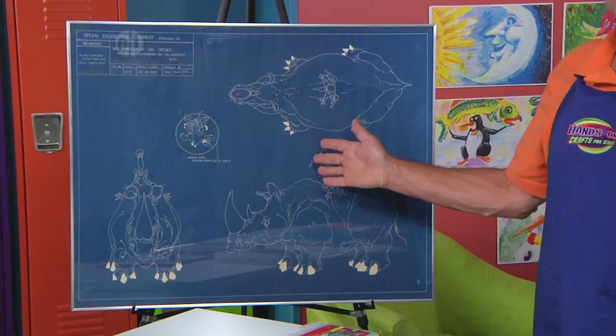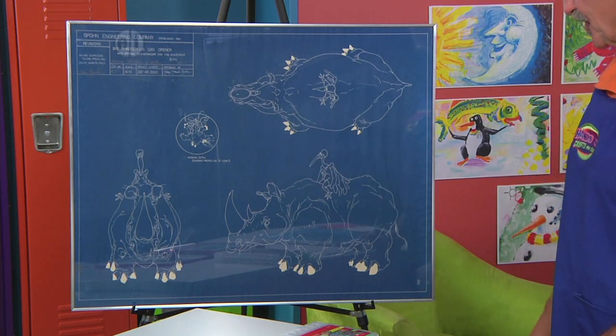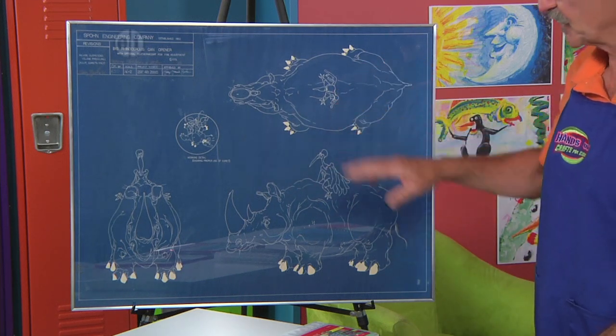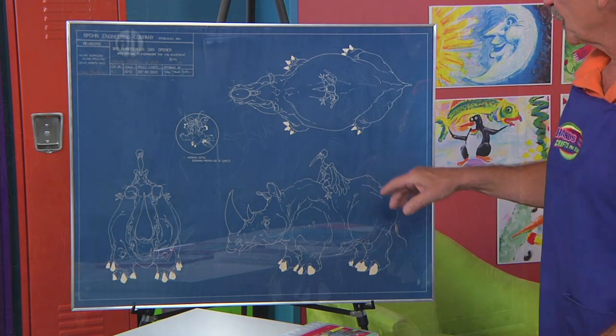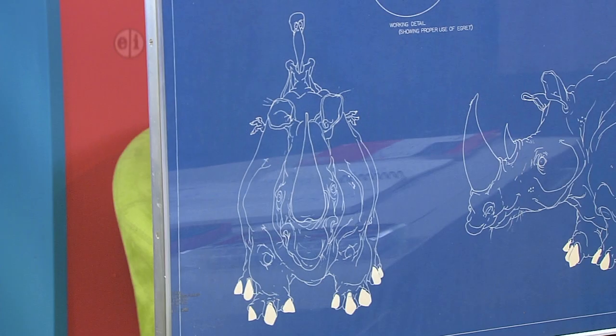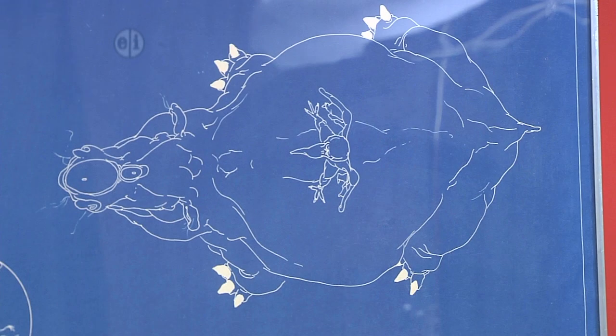So I have a blueprint — we're going to engineer this thing. It's three different views of a rhinoceros having a party with a bird on his back, egrets only. So I've got the front view looking straight on at the rhinoceros, the side view, and a top view.